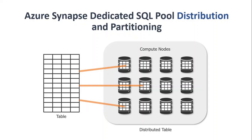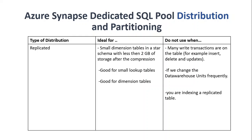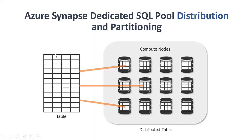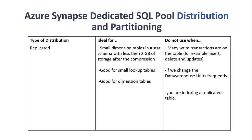The first distribution type is replicated. What it does is replicate your table 60 times across your compute nodes, meaning all records of your table are stored on every compute node. This is ideal for small dimension tables in a star schema — specifically tables less than two gigabytes after compression. Azure performs roughly five times compression by default, so this works well for small dimension or lookup tables under two gigs.